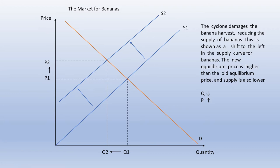A succinct explanation: the cyclone damages the banana harvest, reducing the supply of bananas. This is shown as a shift to the left in the supply curve for bananas. The new equilibrium price is higher than the old equilibrium price, and quantity is also lower. We want to cover these key bases: the shift in the curve, the change in equilibrium price, and the change in quantity.